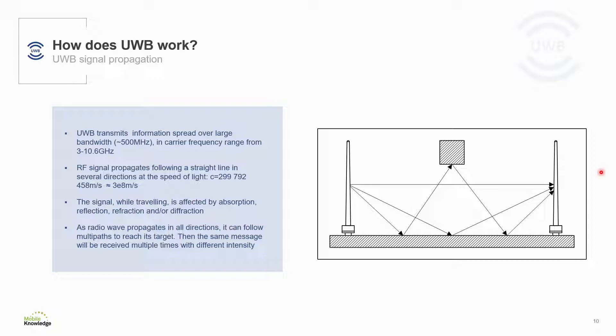The ultrawideband signal propagates in the air at the speed of light. While traveling, when the signal hits an obstacle, part of it is absorbed, reflected, or refracted. As a result, the radio wave propagates in all directions following several paths to reach its target, as shown in the picture here. This means that the receiver gets the same signal multiple times with different intensity, consisting of a direct signal as well as reflected signals.